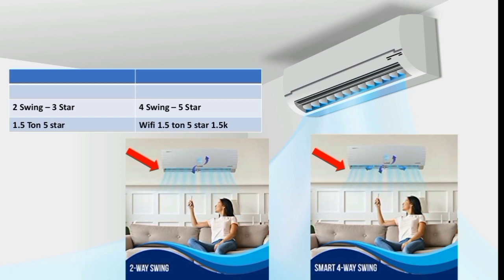Now let's talk about the pros and cons. The 5-star variant comes with 4-way swing — up, down, left, right — while the 1.5-ton 3-star variant comes with only 2-way swing. This is the first minus point. The second minus is that the 1.5-ton 5-star model has Wi-Fi support, but the non-Wi-Fi version is also available. If you specifically want Wi-Fi support, make sure to choose the right model.